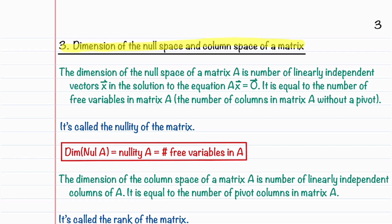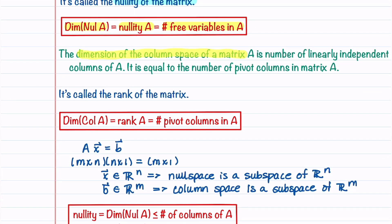The dimension of the null space of a matrix A is the number of linearly independent vectors x in the solution to Ax = 0. It equals the number of free variables in A — columns without a pivot. This is called the nullity of the matrix. The dimension of the column space of A is the number of linearly independent columns, equal to the number of pivot columns. This is called the rank of the matrix.